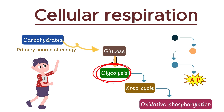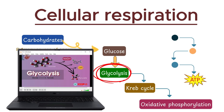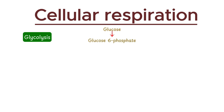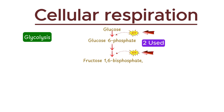Let's start with glycolysis. I'll cover only the steps relevant to this video, but if you want a more detailed breakdown, check out the description box. In glycolysis, glucose is first converted into glucose-6-phosphate using one ATP molecule. Next, fructose-6-phosphate is converted into fructose-1,6-bisphosphate, utilizing another ATP molecule. So far, we've used two ATP molecules with no ATP production.